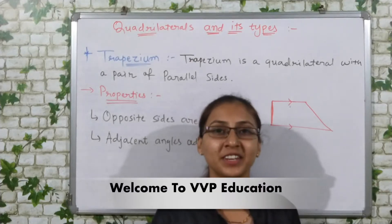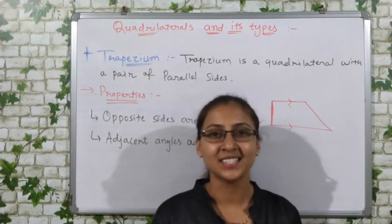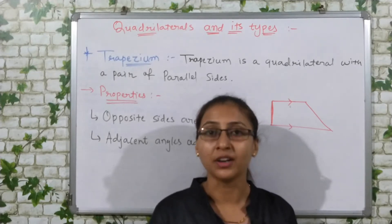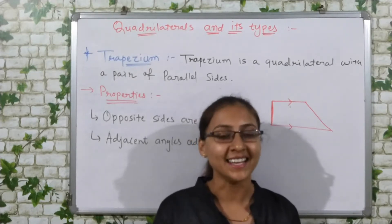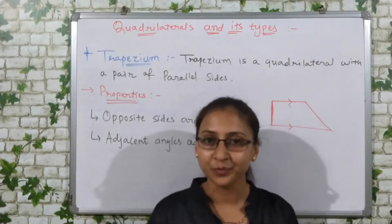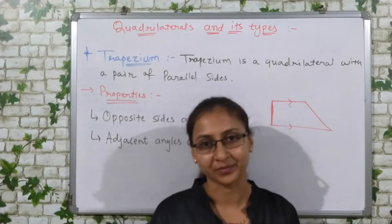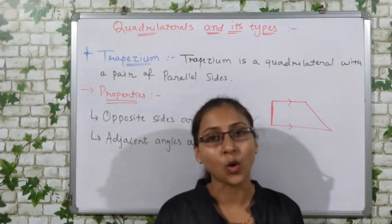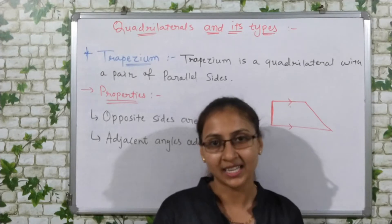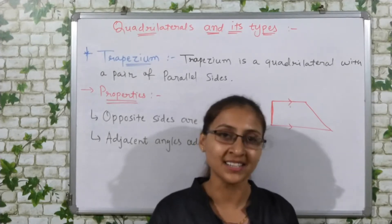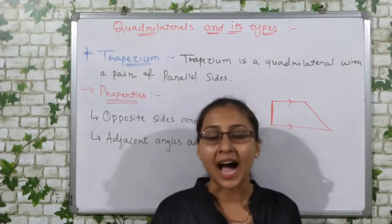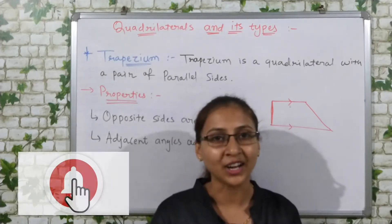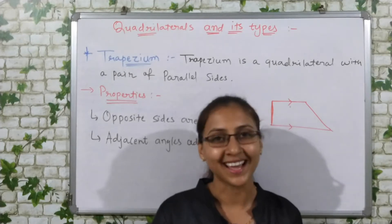Hi friends! Welcome back to my channel VVP Education. Let's continue our series on Geometry. In the previous video we studied about polygons. Do you remember the polygon with four sides? Yes, it is quadrilaterals. In this video we are going to learn about quadrilaterals and its types, properties, and characteristics. If you are new to my channel, please subscribe to VVP Education and press the bell icon to get notifications of upcoming videos. Let's start!